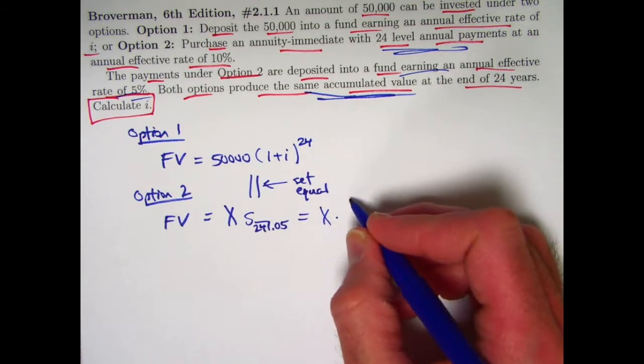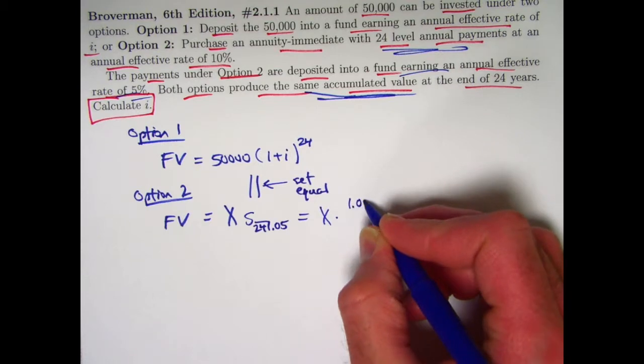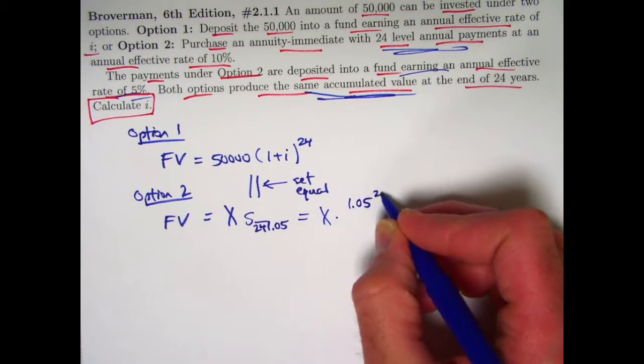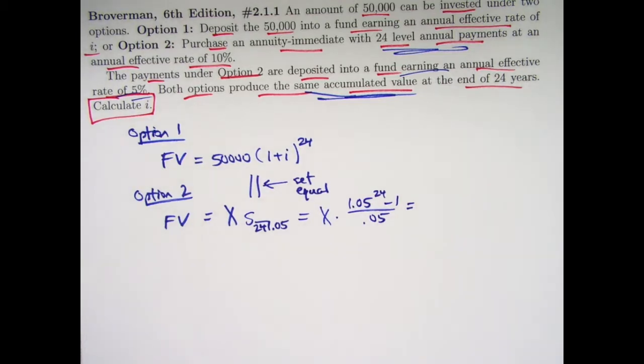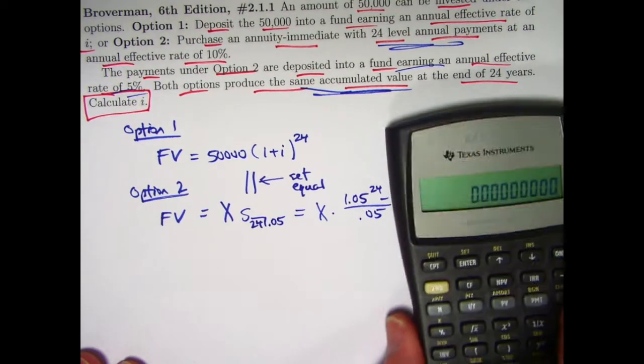That's a future value for an annuity immediate with 5% interest rate. The formula for that would be 1.05 to the 24th minus 1 divided by 0.05. Let's go ahead and find that quantity. 1.05 to the 24th minus 1 divided by 0.05.